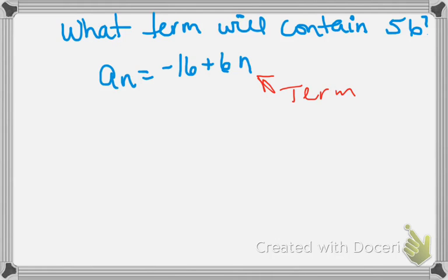Well, if you remember, AN is our answer. So we're going to put 56 in for AN. We don't know the term, so we're going to leave N alone.